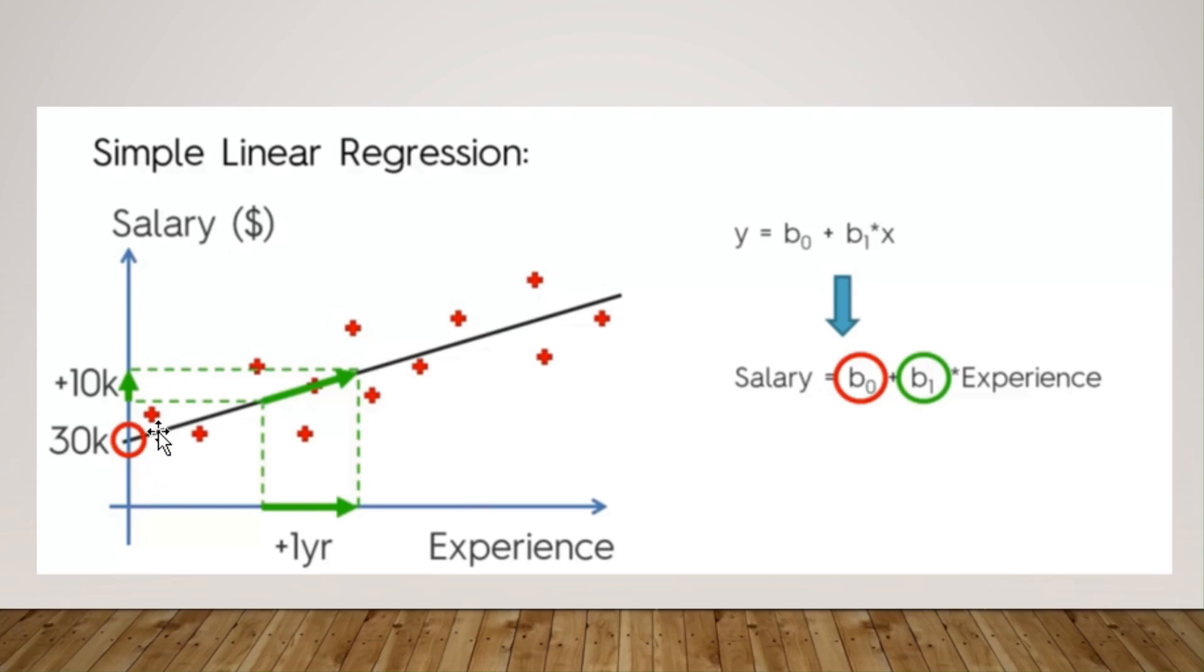From this graph, we can make clear that here b0 represents 30,000, which means every employee in the firm is going to get a base salary of 30,000. And what does this b1 mean here? b1 is nothing but a numerical value which is trying to fit this actual value on this best fit line.